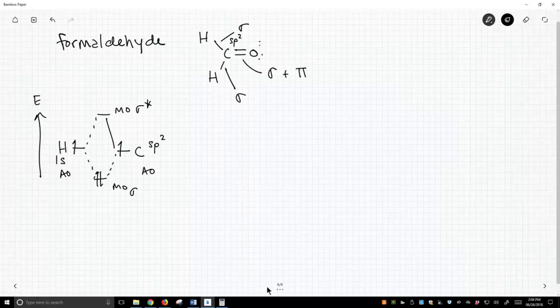That's how the sigma bonds work in formaldehyde. How about the pi bonds? This carbon is sp2 hybridized, meaning we circle s and two p's and get three sp2 hybrids plus the leftover p orbital. Oxygen also has a p orbital.